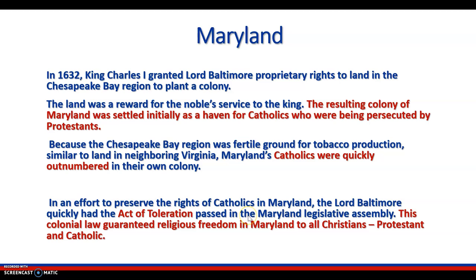Maryland. In 1632, King Charles I granted Lord Baltimore proprietary rights to land in the Chesapeake Bay region to plant a colony. The land was a reward for noble service to the king. The resulting colony of Maryland was settled initially as a haven for Catholics who were being persecuted by Protestants. Because the Chesapeake Bay region was fertile ground for tobacco production, similar to the land in neighboring Virginia, Maryland's Catholics were quickly outnumbered in their own colony. Lord Baltimore had the Act of Toleration passed by the Maryland Legislative Assembly, a colonial law that guaranteed religious freedom to all Christians — Protestants and Catholics.